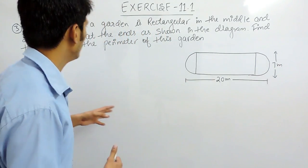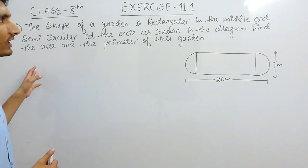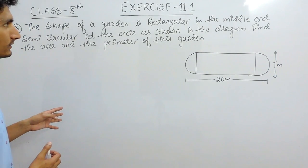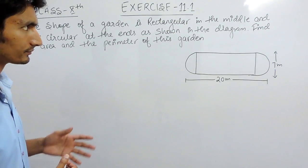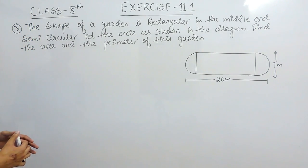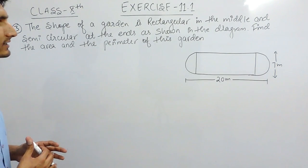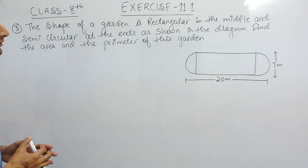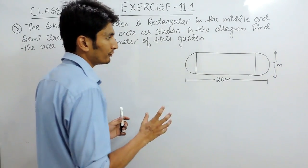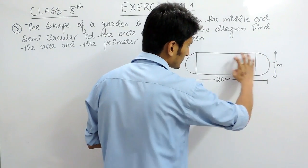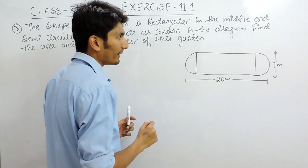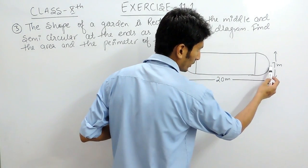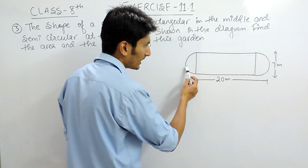Hello everyone. In this video we are going to solve question number 3 of exercise 11.1. The question says the shape of a garden is rectangular in the middle and semi-circular at the ends as shown in the diagram. We have to find the area and the perimeter of this garden. The perimeter is the outer boundary — we have to find the length of this outer boundary.